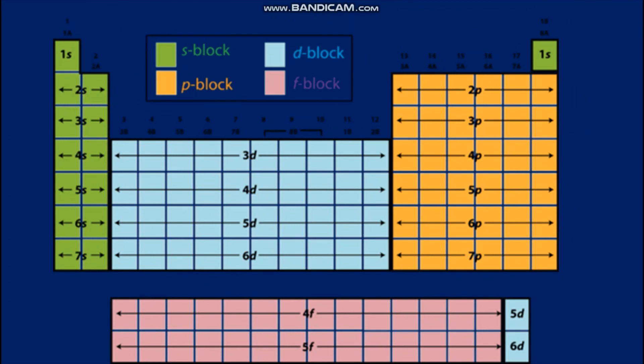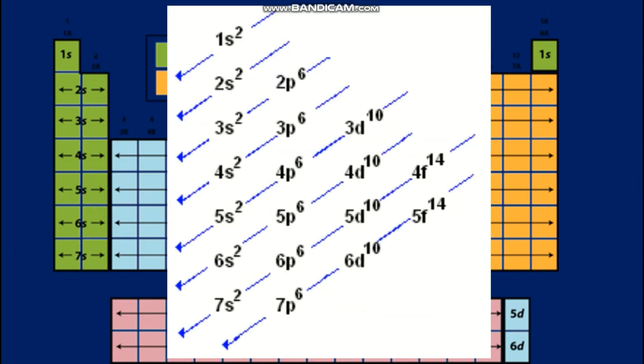Here is a simpler diagram to show the different blocks. On the left you have the S block, in the transition metals section you have the D block, and on the right side you have the P block. These diagrams simplify and show you which order the electronic configuration is used.